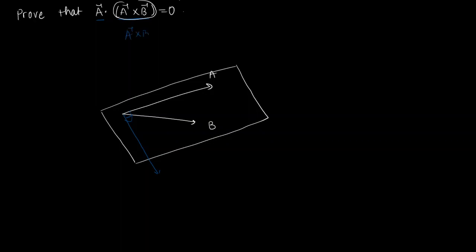So the vector A cross B is perpendicular to the vector A.